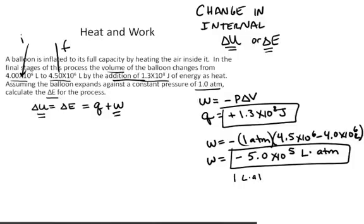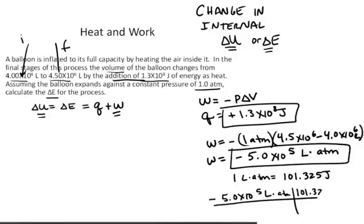1 L·atm equals 101.325 joules. So the conversion is -5.0×10⁵ L·atm times 101.325 joules per 1 L·atm. The liter-atmosphere unit cancels, and that gives us a value of -5.1×10⁷ joules. So now we have our acceptable unit value for W.